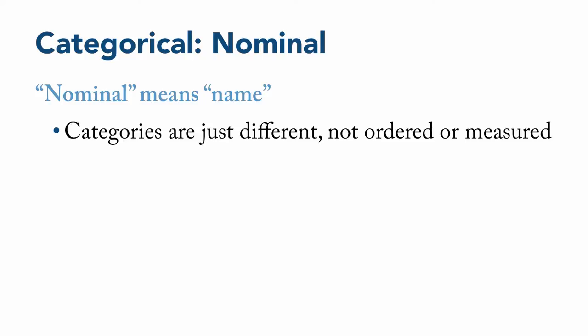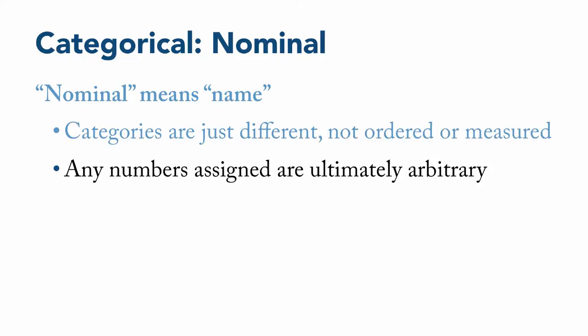Nominal means name. And in this case, the categories are just different. They're not ordered or measured. That is, even though you may give a number to someone on a nominal variable, it doesn't indicate an amount of something. Instead, it's just a stand-in for a word or name of a category. Because of this, any numbers assigned are ultimately arbitrary. That is, they can take any value you want. It doesn't really matter. But to be clear, you might want to code a value with a number because certain computer programs work much better that way, and it can make the analysis much easier to conduct and interpret.